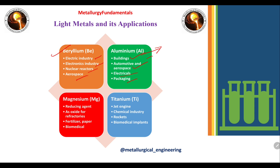The third light metal is magnesium, used as a reducing agent, as an oxide for refractories, in fertilizers, and in biomedical applications. The last light metal is titanium, used in jet engines, the chemical industry, rockets, and biomedical implants.